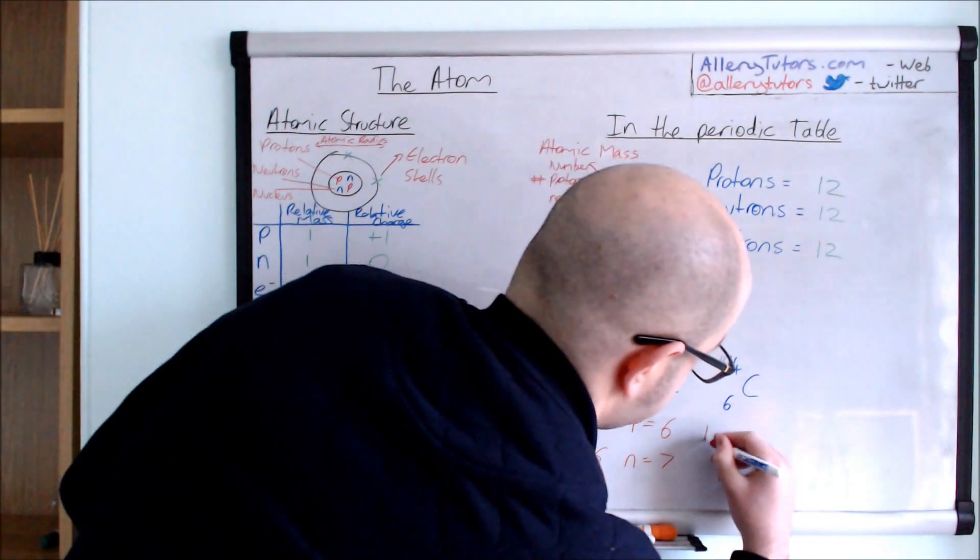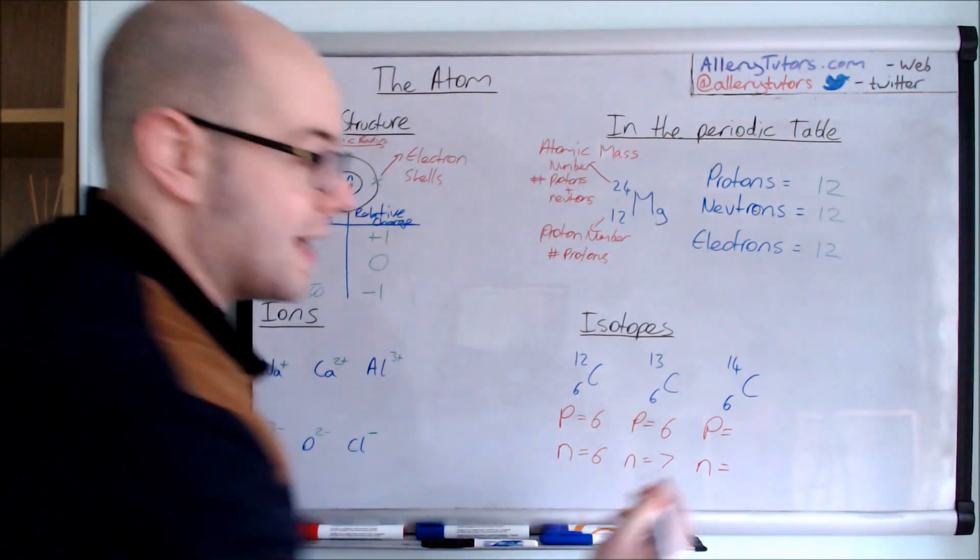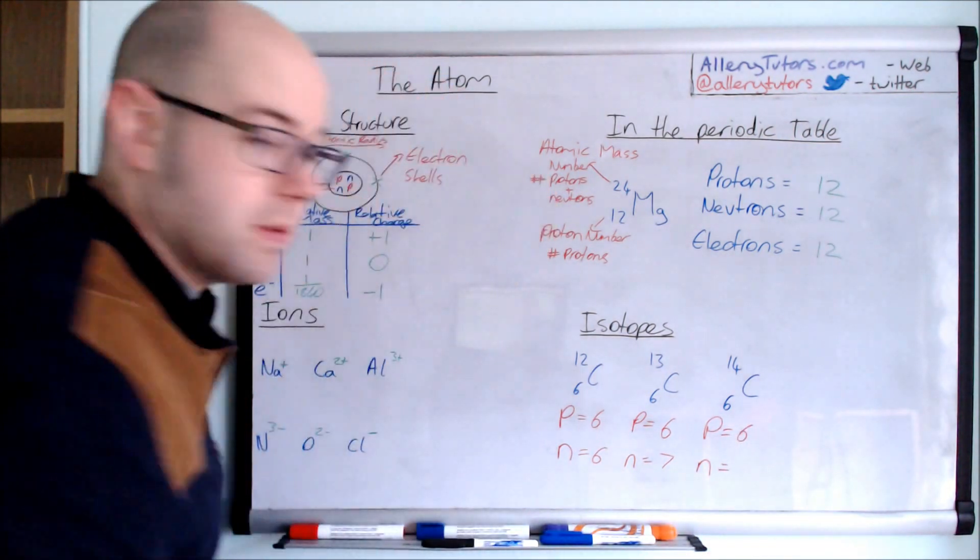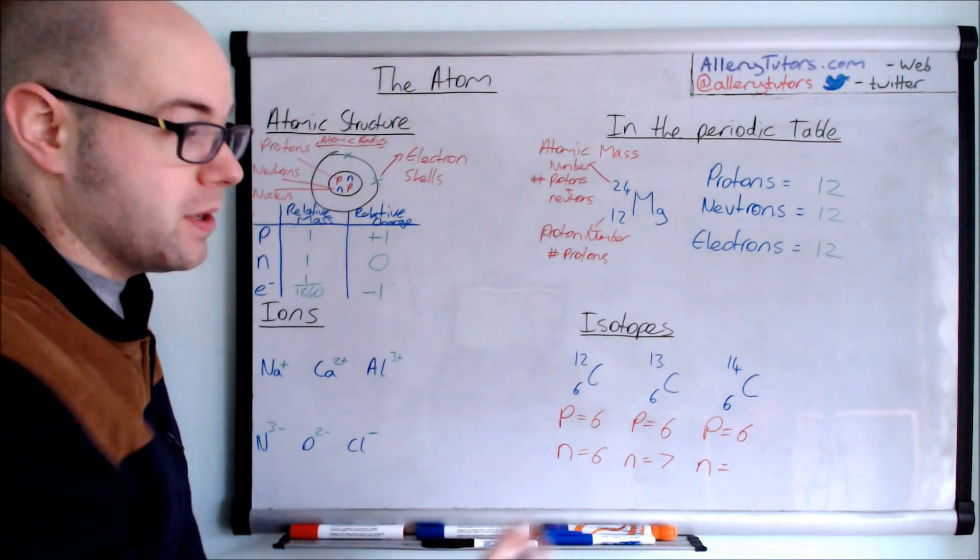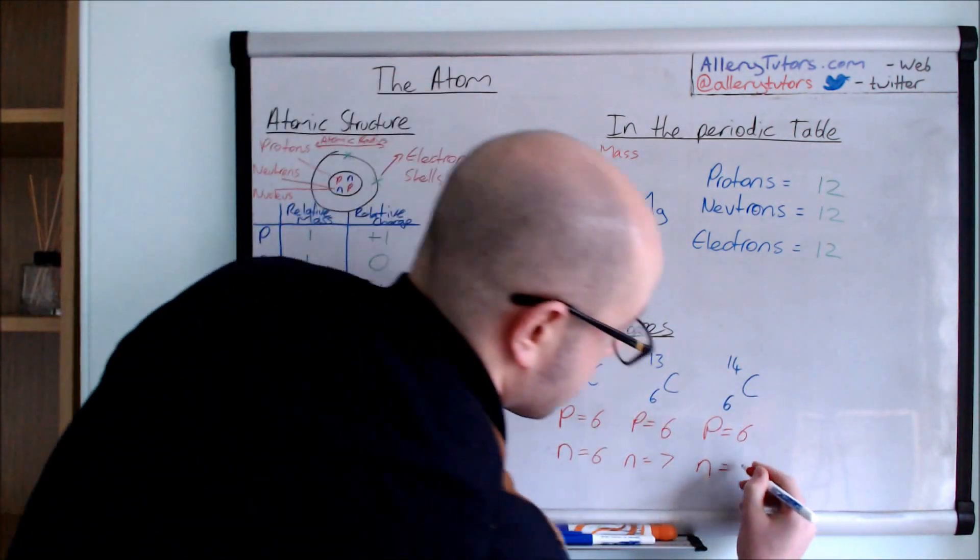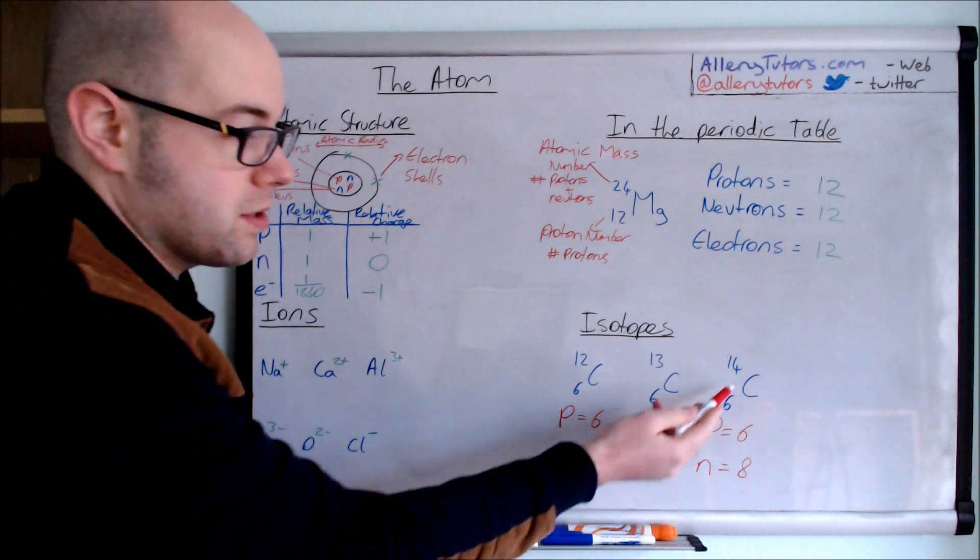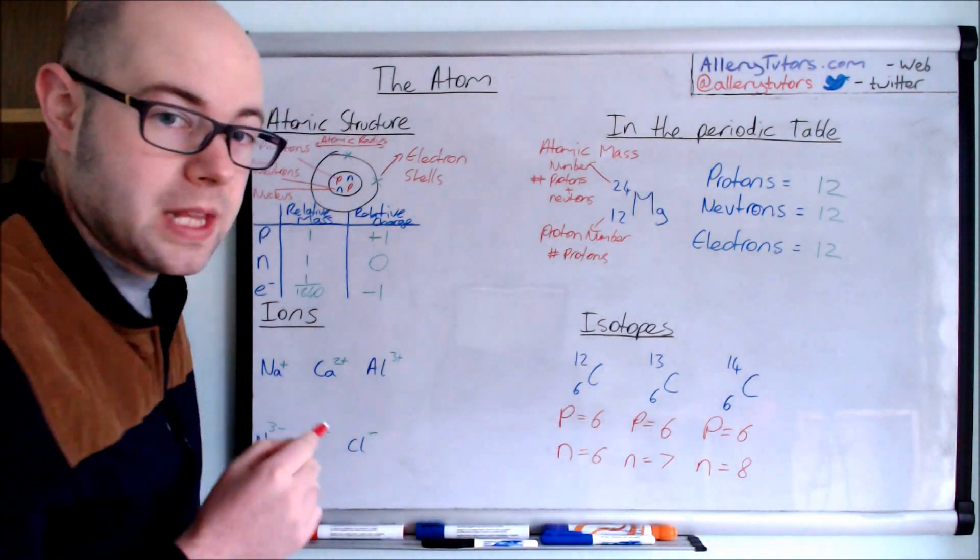And then the last one is, again, protons and neutrons. So the number of protons in here, again, is the same. It's an isotope. So we have six protons. And the number of neutrons in this case is 14 minus six, which is going to give us eight. So as you can see, the heaviest isotope here is going to be this one. And this is going to be the lightest.